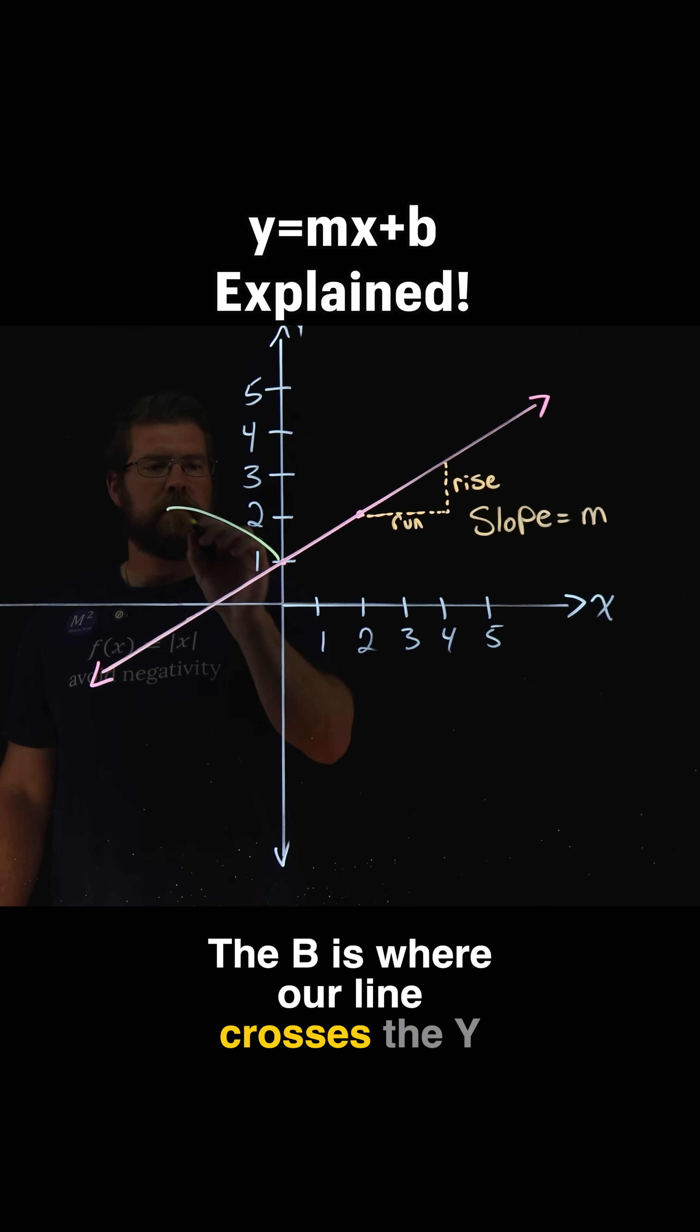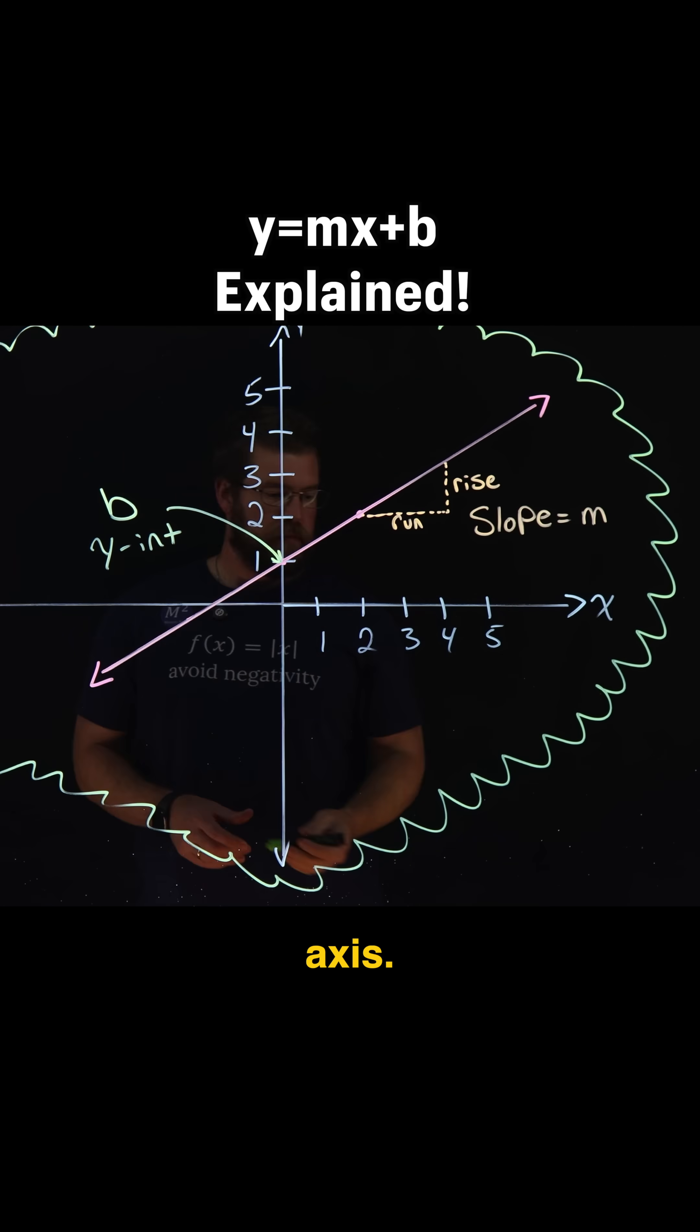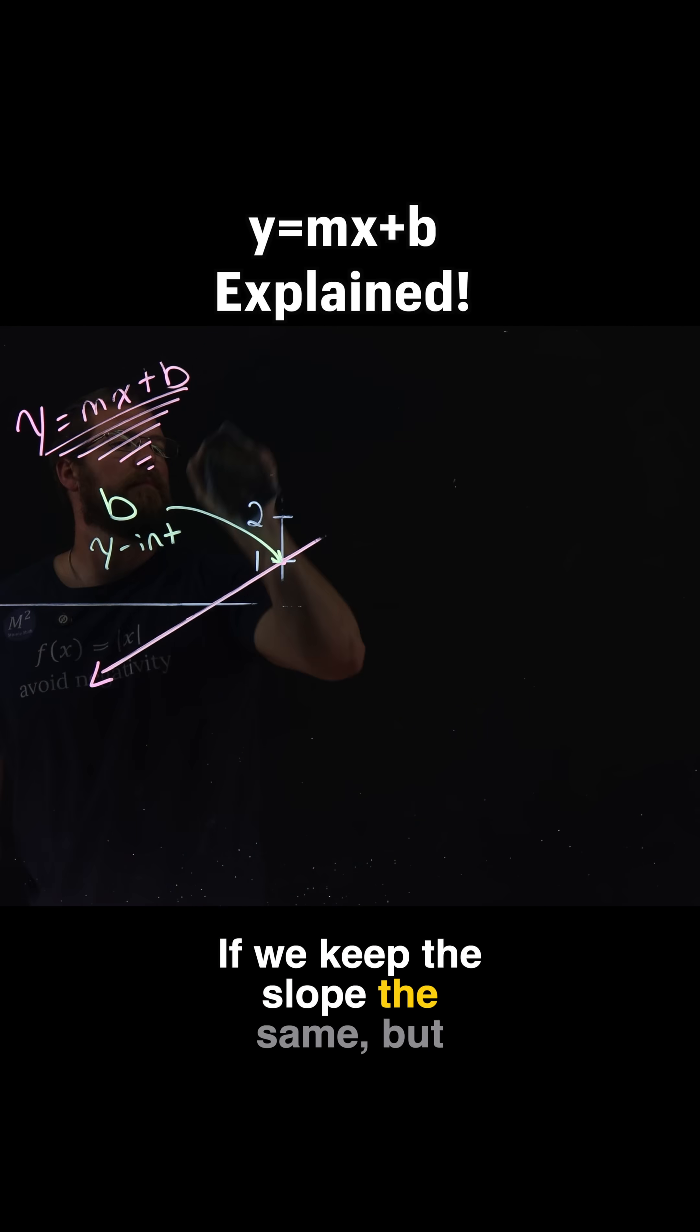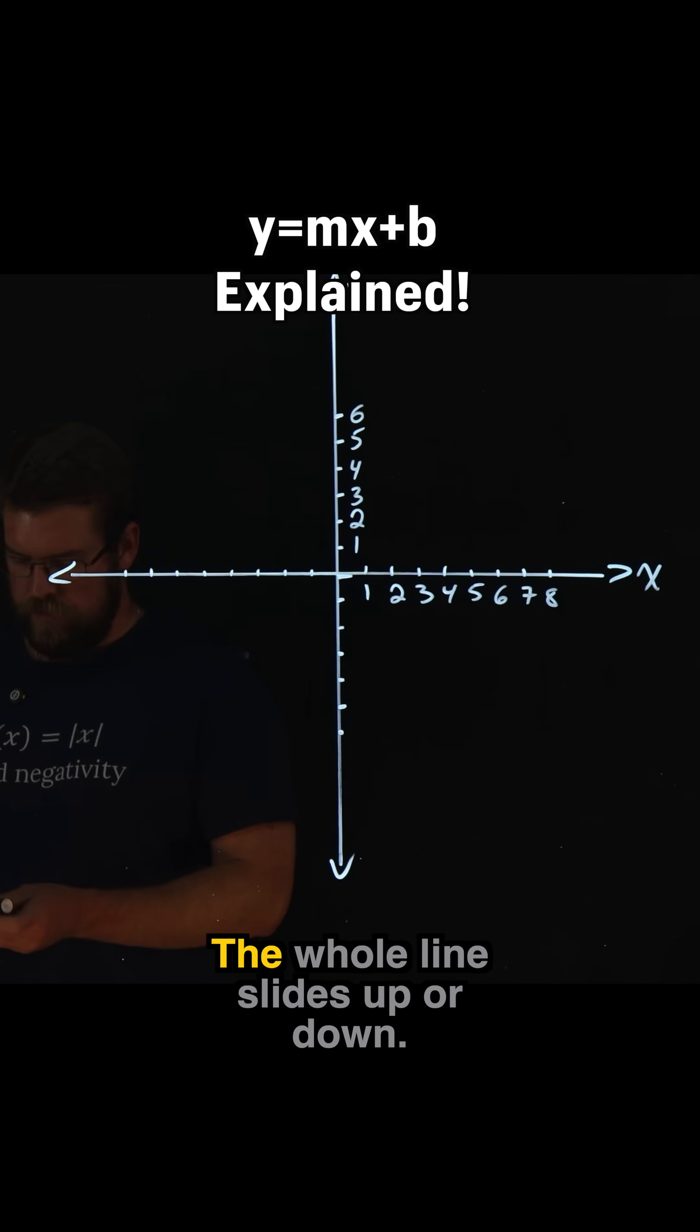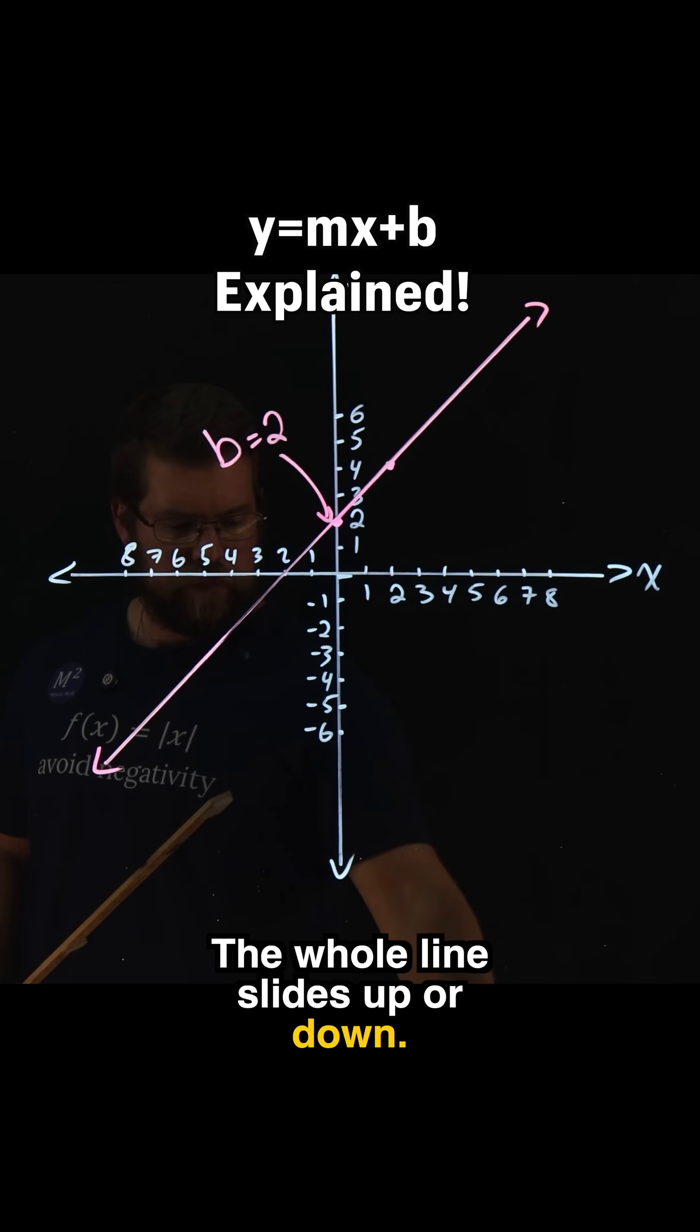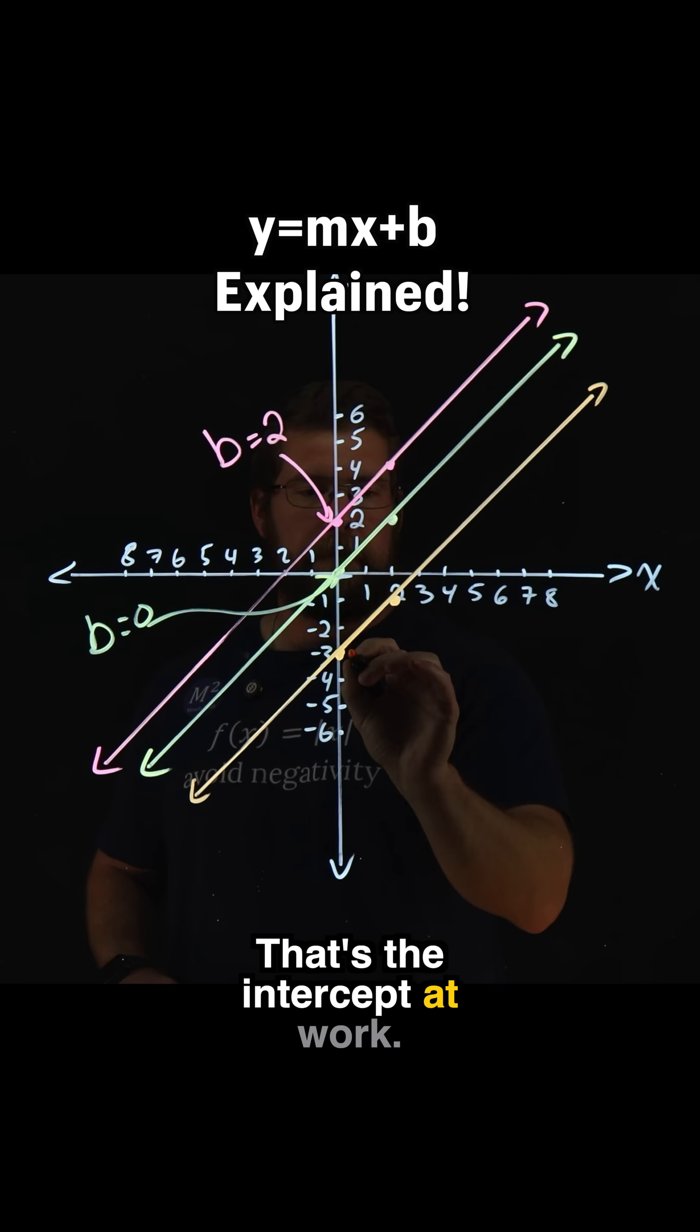The b is where our line crosses the y-axis. If we keep the slope the same but change b, look what happens. The whole line slides up or down. That's the intercept at work.